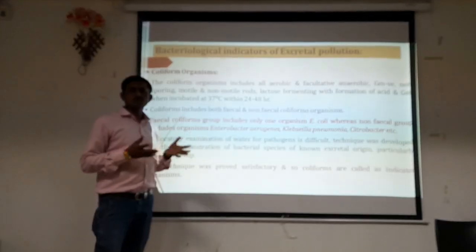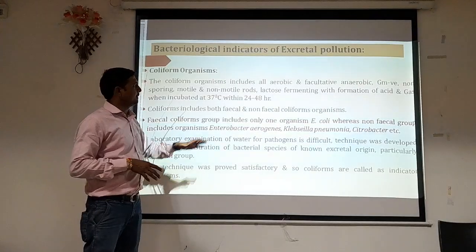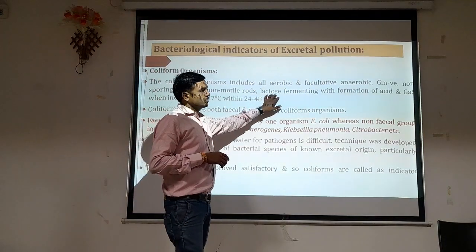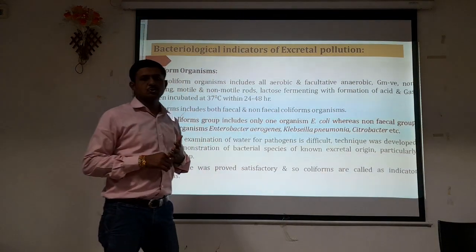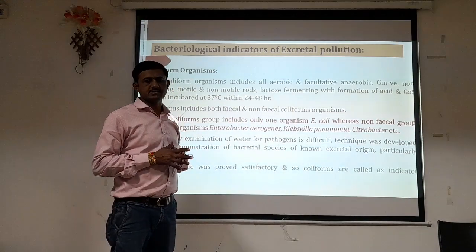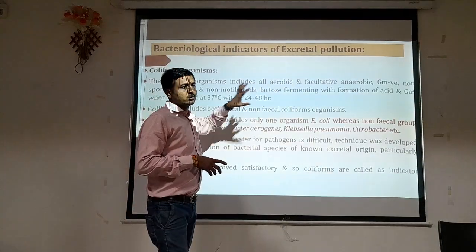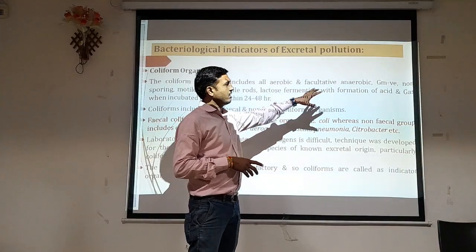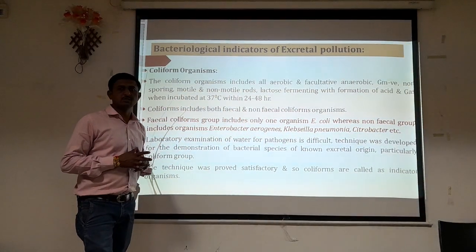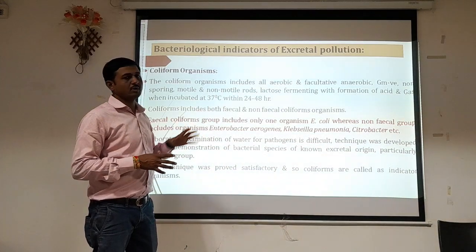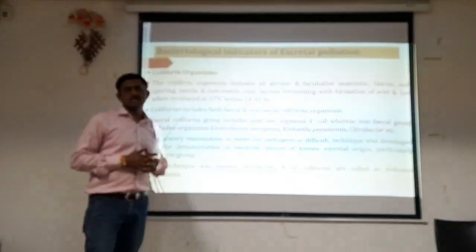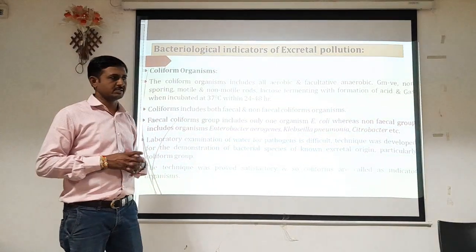Coliform organisms are either motile or sometimes non-motile, or sluggishly motile — they are short rod-shaped. They are lactose fermenting; lactose is a sugar. When inoculated in a lactose sugar-containing medium, they ferment that lactose sugar by producing acid and gas when incubated at 37 degrees Celsius for 24 to 48 hours of incubation.